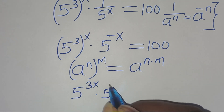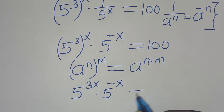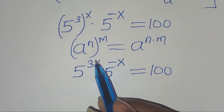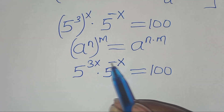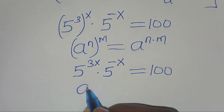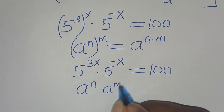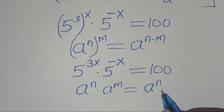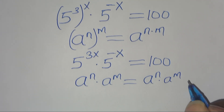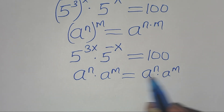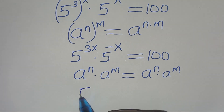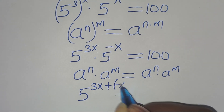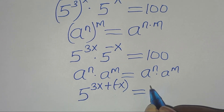So we have 5^(3x) multiplied by 5^(-x) equals 100. This is in the form of a^n times a^m, which we can express as a to the power of n plus m. Applying this exponent property, we get 5 to the power of 3x plus (minus x) equals 100.